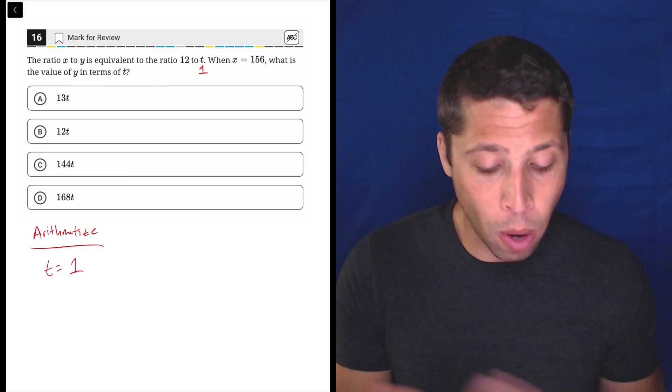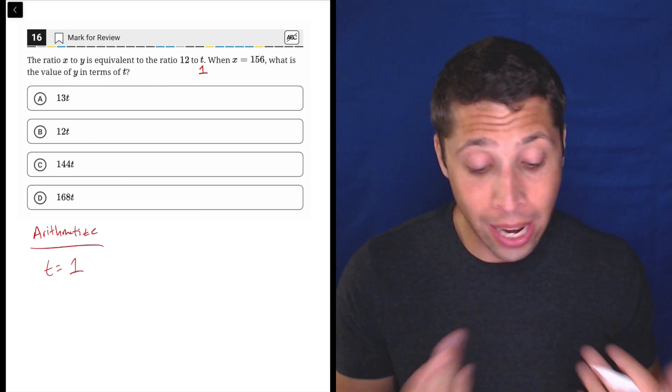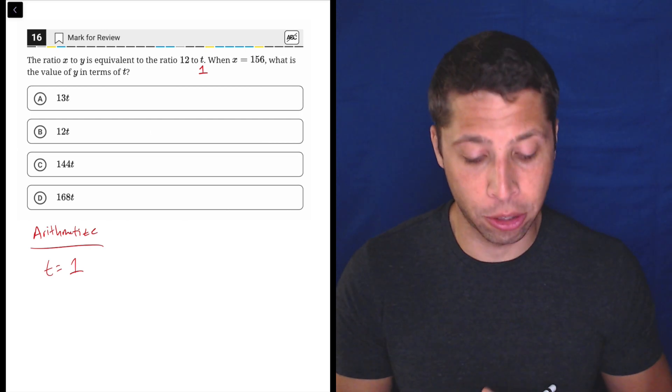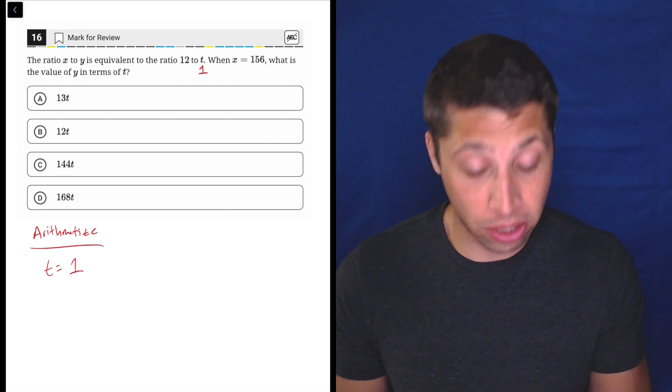The ratio x to y is equivalent to the ratio 12 to one. When x is 156, what is the value of y in terms of t? So we can set this up just using the first sentence.